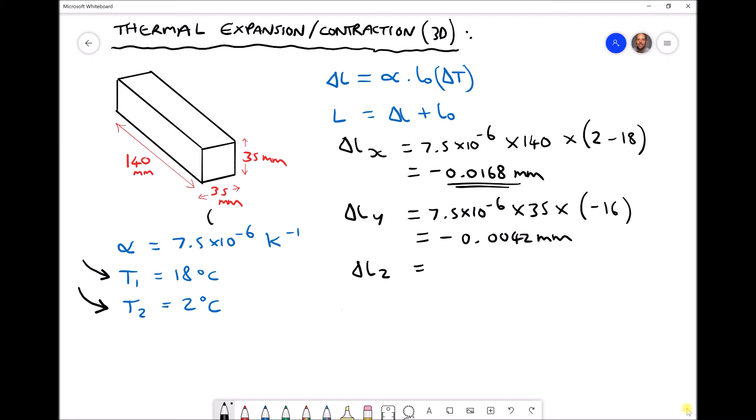So here we have a square cross section. Here we have our y direction and here we have our z direction, and we can see that each of those are equal to minus 0.0042.